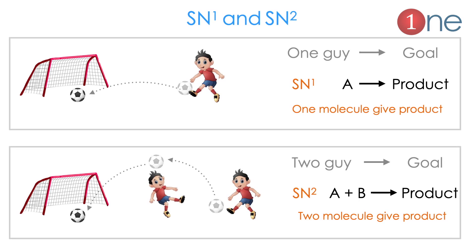Let us understand what is SN1 and SN2 from football. If one guy makes the goal, it is like SN1 reaction, which is one molecule makes the product. Similarly, if two guys are making goals, it is SN2 reaction, which is two molecules give the product. It is all about the participation of the molecule in the rate determining step.